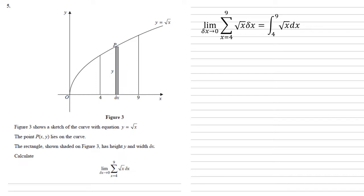Integrating root x, we think of that as x to the power of a half, raising the power to 3 over 2, dividing by 3 over 2 gives us 2 thirds x to the power of 3 over 2, with bounds of 4 and 9.